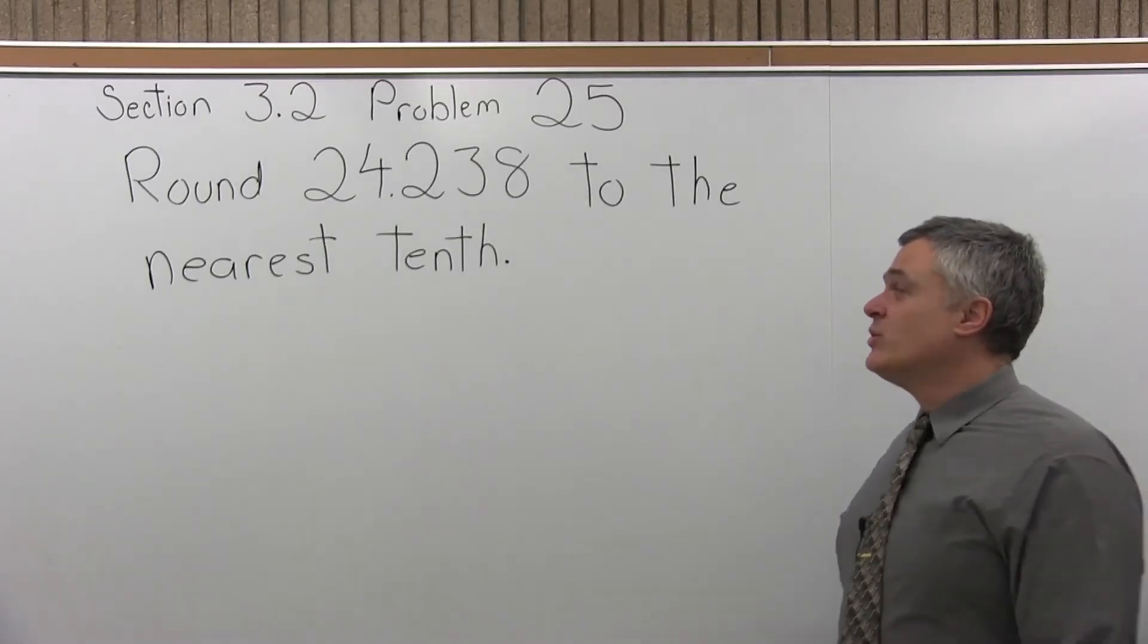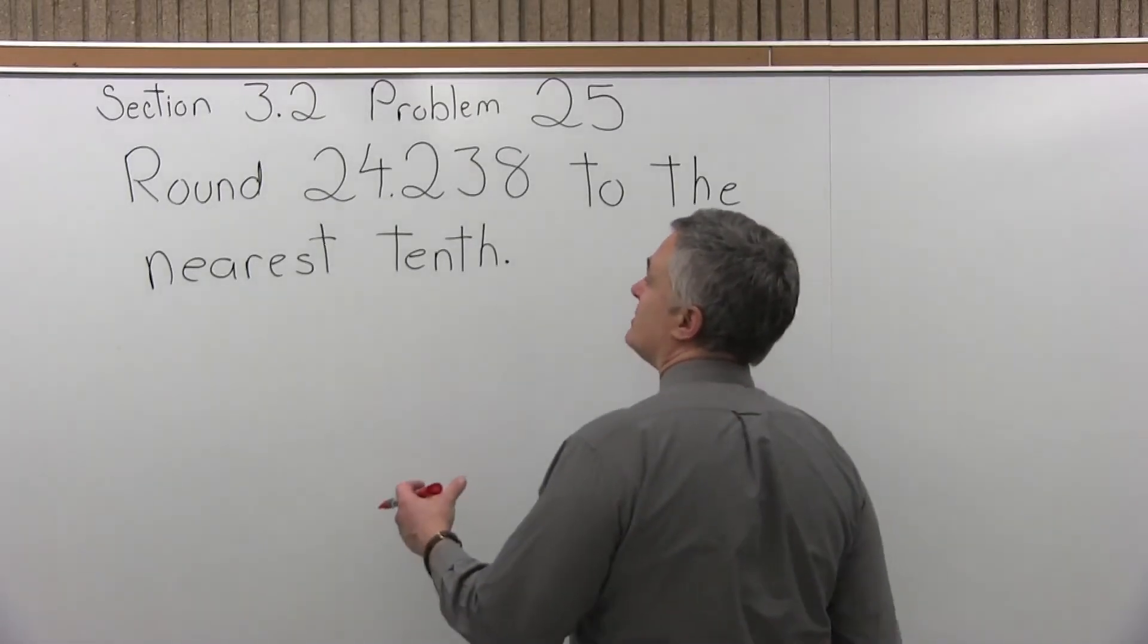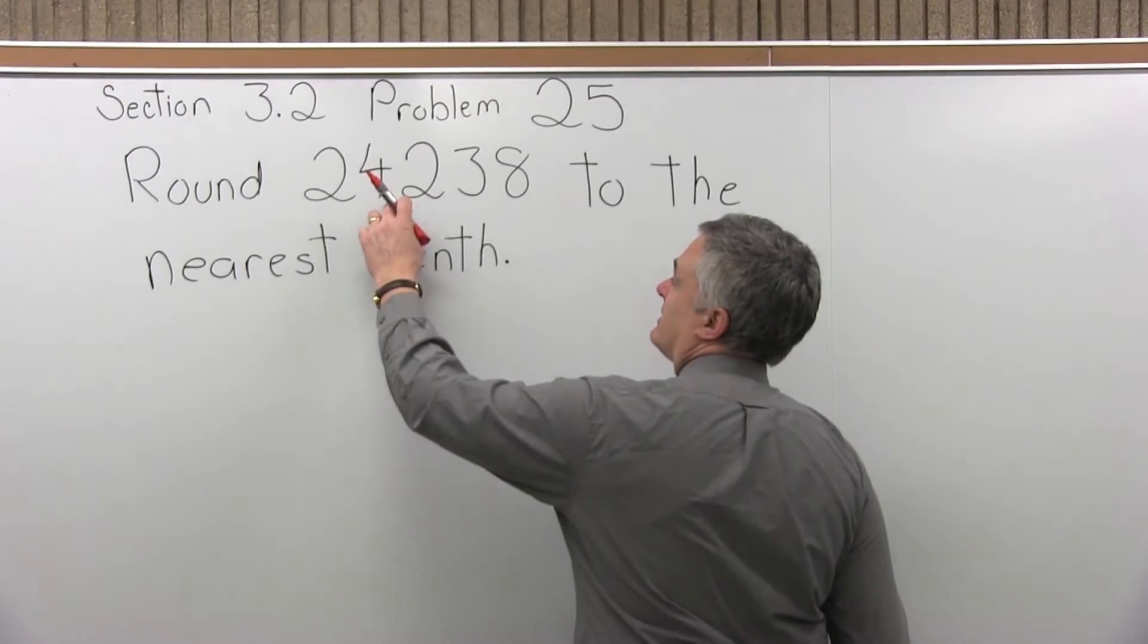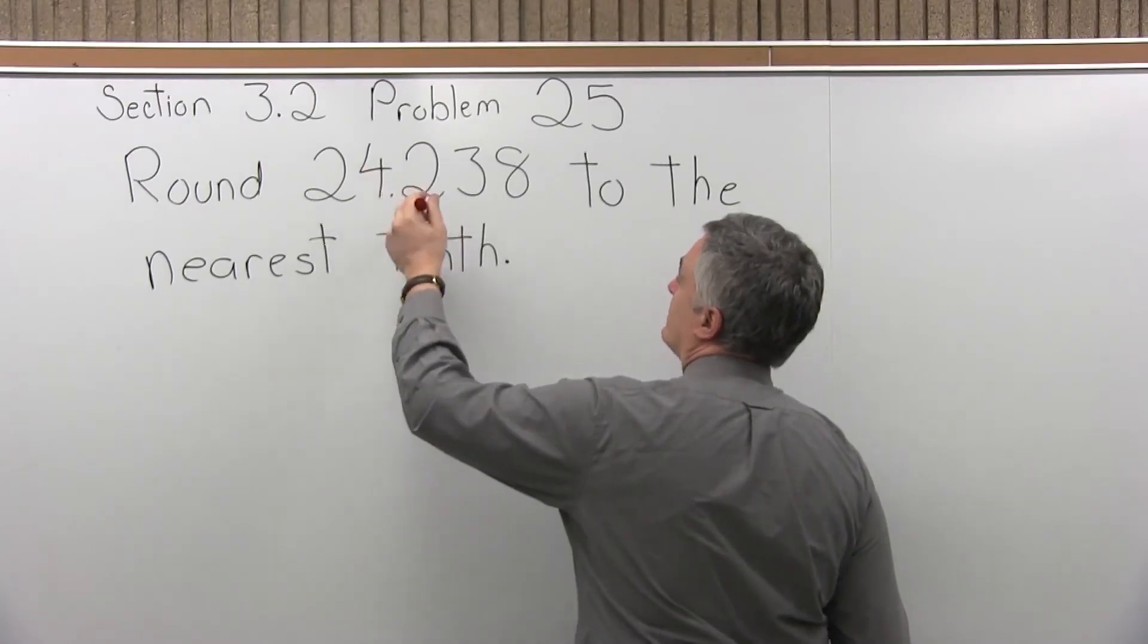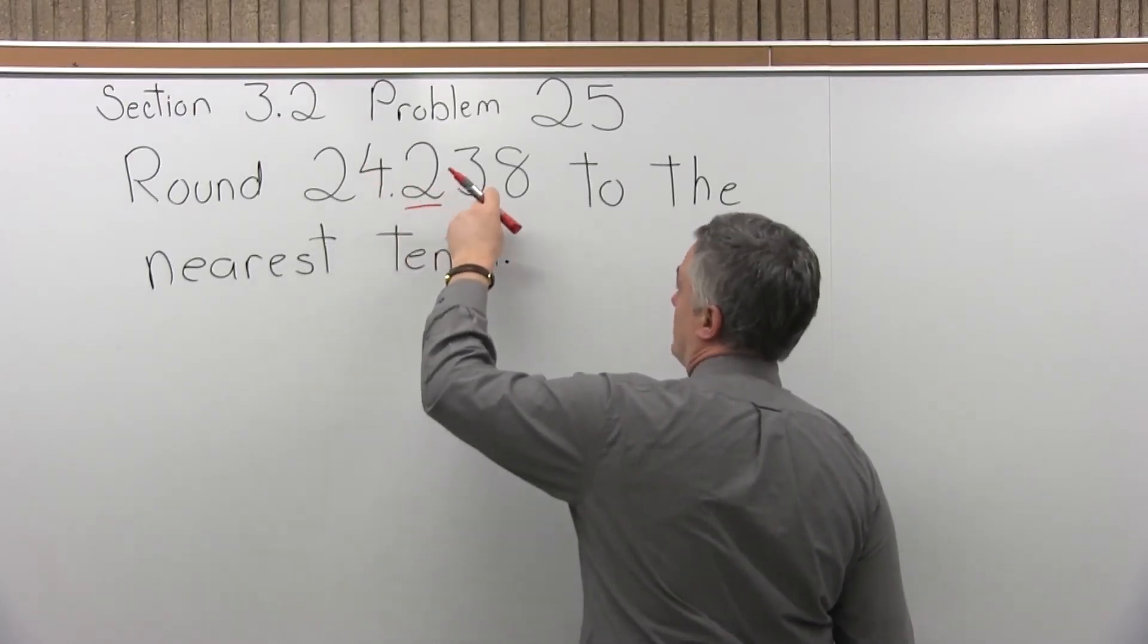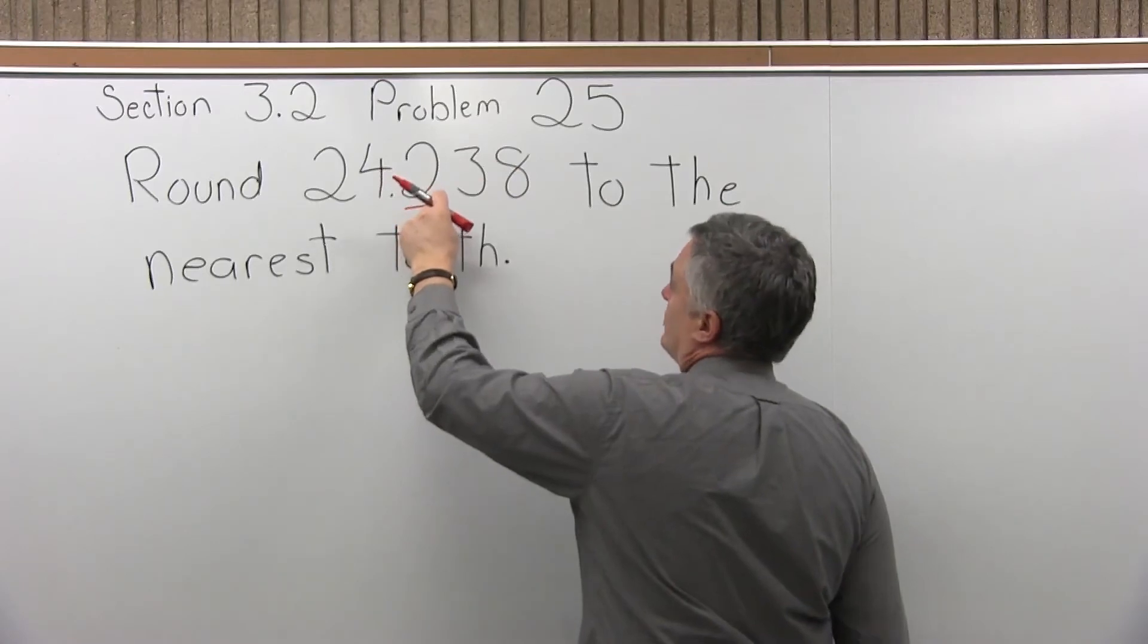So first let's determine which digit is in the tenth position. If you start at the decimal and go over one to the right, the first one is tenths. It goes tenths, hundredths, thousandths. So tenths would be the two.